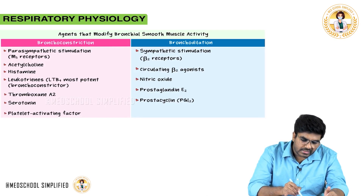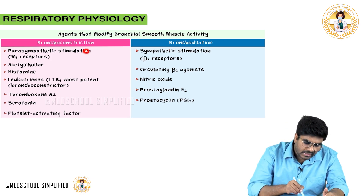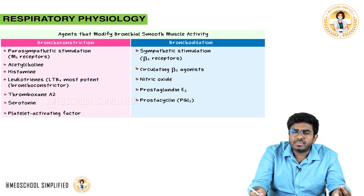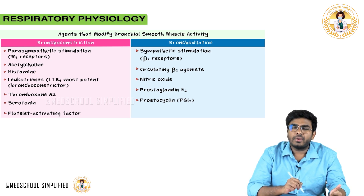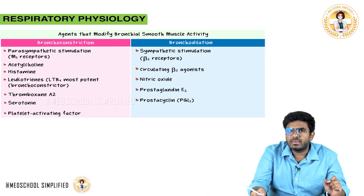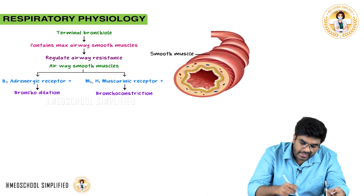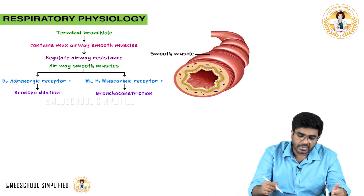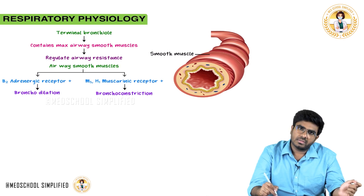Now let's look at agents that modify bronchial smooth muscle activity. Parasympathetic stimulation via acetylcholine causes bronchoconstriction. Histamine, released from mast cells, also causes bronchoconstriction by acting on H1 receptors present on bronchial smooth muscles, similar to M3 receptor stimulation.